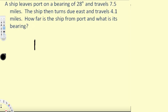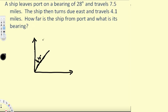Let's write our x-y components. The bearing is 28 degrees — bearing is measured from the north — so from the north it is 28 degrees. This is going to be the direction of the ship, traveling 7.5 miles in this direction.